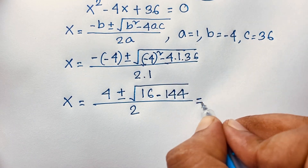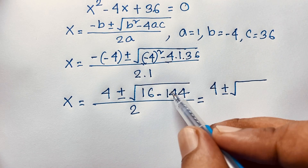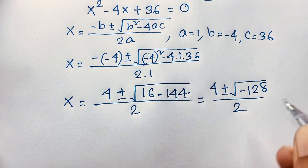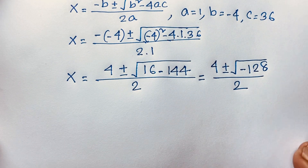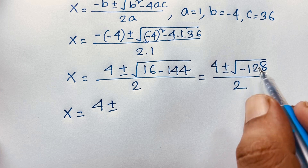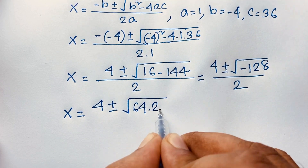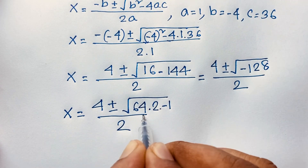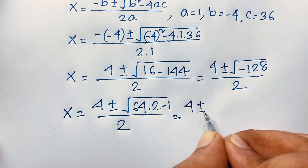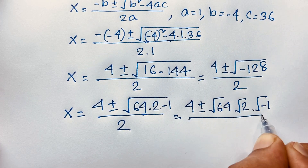So x equals 4 plus or minus square root of 16 minus 144, which is negative 128, over 2. Now evaluating this expression: x equals 4 plus or minus square root of negative 128. We can write negative 128 as 64 times 2 times negative 1, all over 2.